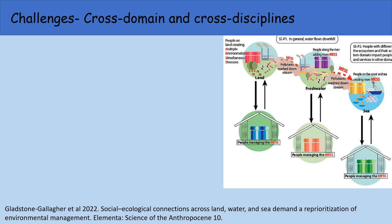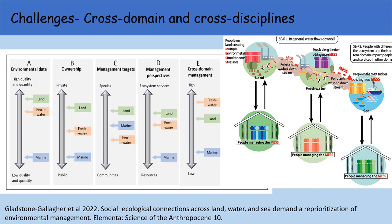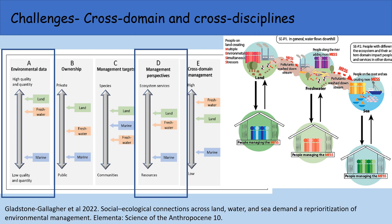In the first phase of the challenge, a cross-challenge workshop with researchers from Biological Heritage, Our Land and Water, and Sustainable Seas highlighted that not only did each domain try to manage its activities separately despite the transference of effects from one domain to the next, but there are a number of other differences between the domains — for example, the amount of data available and management perspectives. It's also true that marine systems can suffer from effects being out of sight and not easily visible.